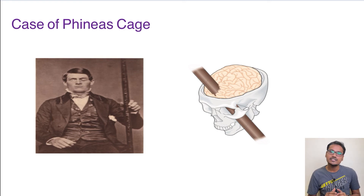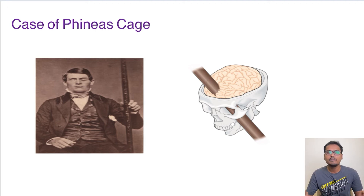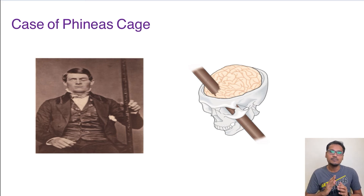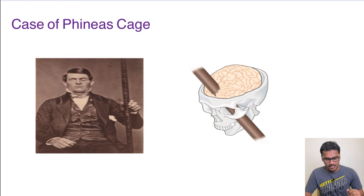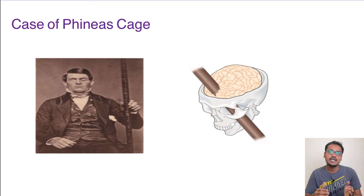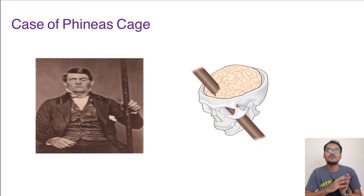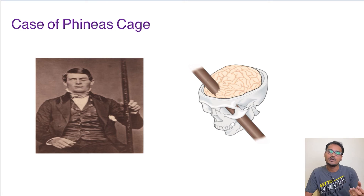The case of Phineas Gage is a historical example of the frontal cortex's role in behavior. Gage was an intelligent engineer building railroads when an iron rod pierced through his frontal lobe during a blast. He remained conscious until reaching the hospital, where his entire frontal lobe had to be removed. Afterward, his behavior became entirely inappropriate. People who knew him said he was not the same person, as his behavior changed completely and he could no longer plan or execute complex tasks.